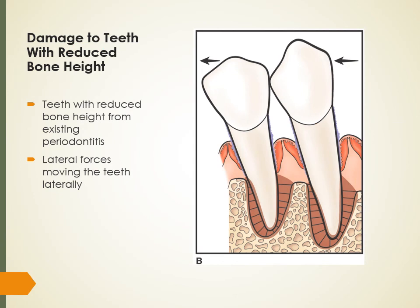When there is damage to the teeth or bone already, as teeth are being moved, they will tip or lean because the fiber on the pressure side is being compressed while the fiber on the tension side is being stretched. The bone on the pressure side will resorb and the bone on the tension side will grow, causing the socket to change shape over time.